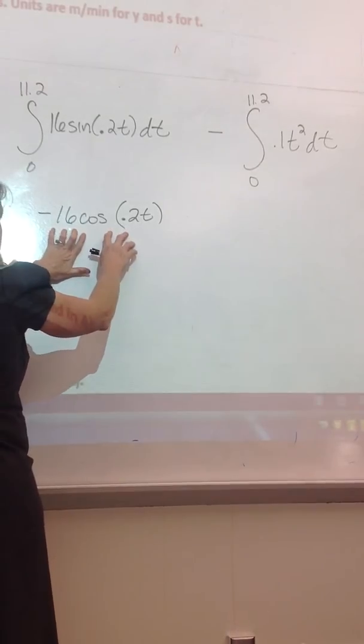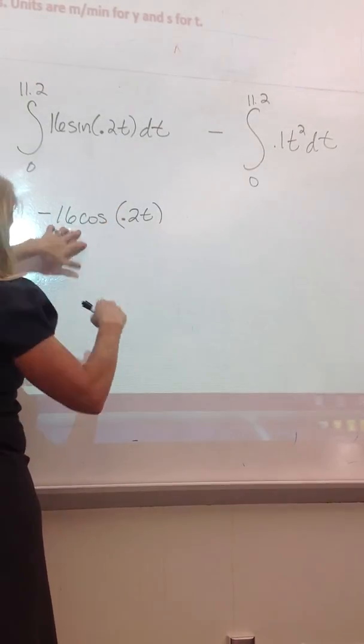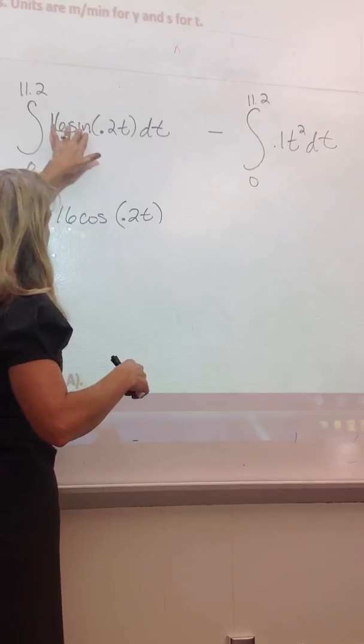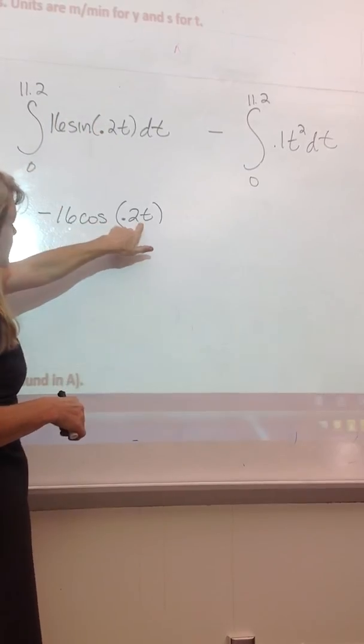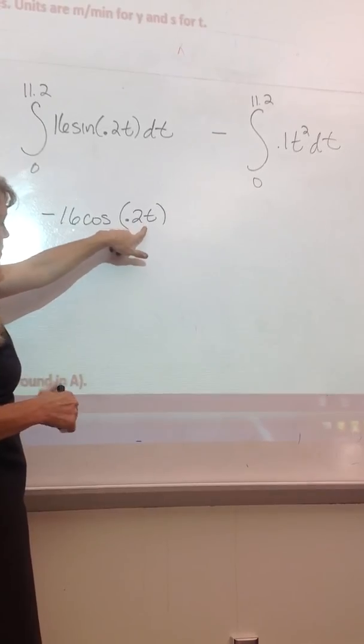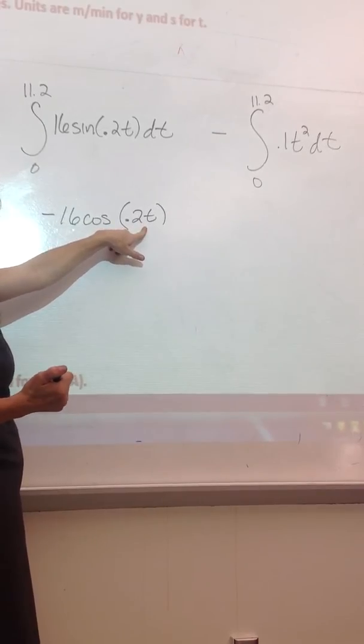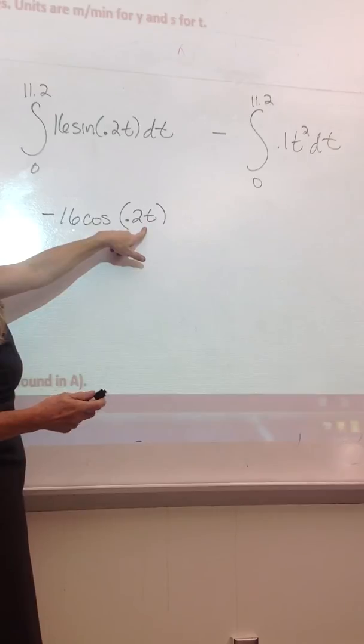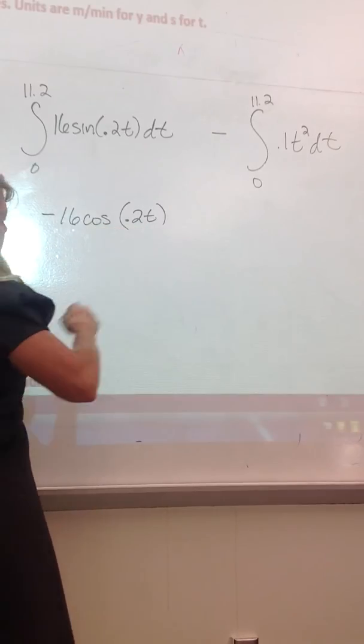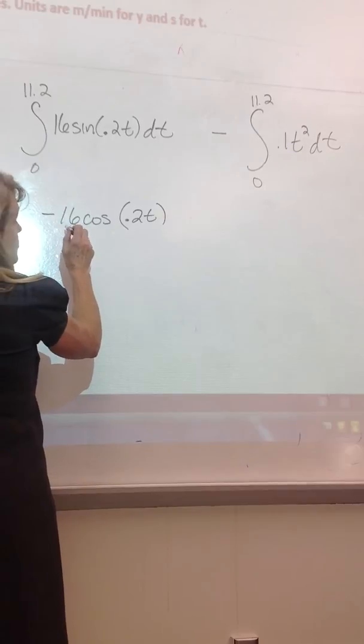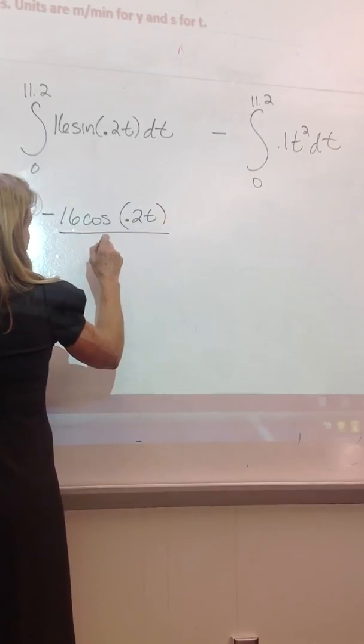You would get negative times negative 16 sine of 0.2T, but then if I were taking the derivative, I would do the chain rule and I would multiply by 0.2. So my antiderivative needs to have me divide by 0.2.